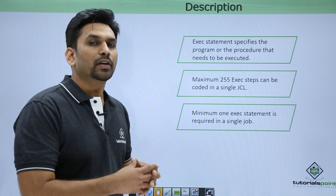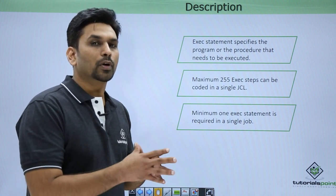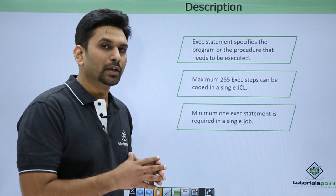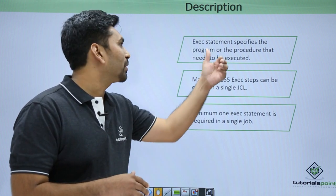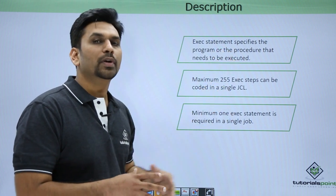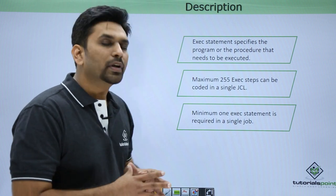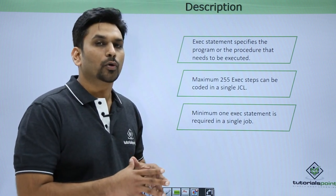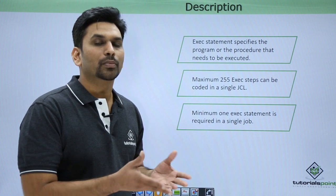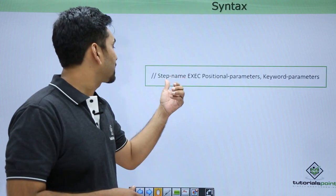Why is the EXEC statement required? In the EXEC statement we specify the program name or the procedure name — the program you want to execute. Suppose you want to execute program A, then you need to mention the program name in the EXEC statement. A job can have a maximum of 255 EXEC statements, and at least one EXEC statement is required for a job, because without a program there is no point in coding a job.